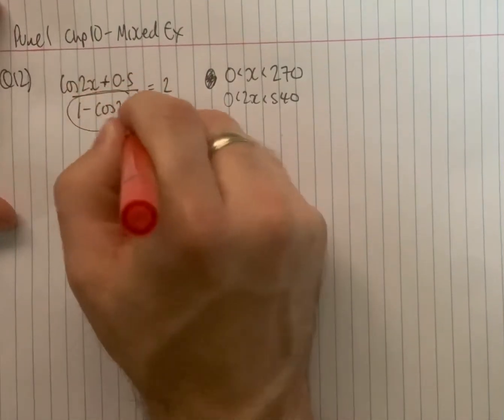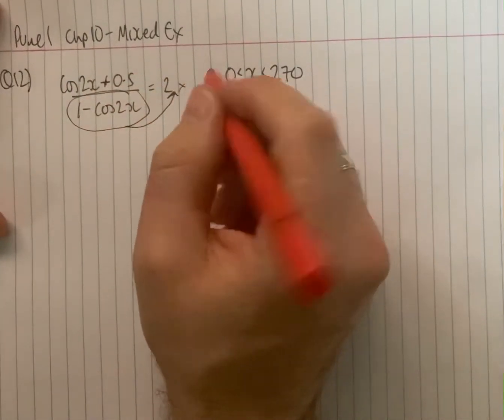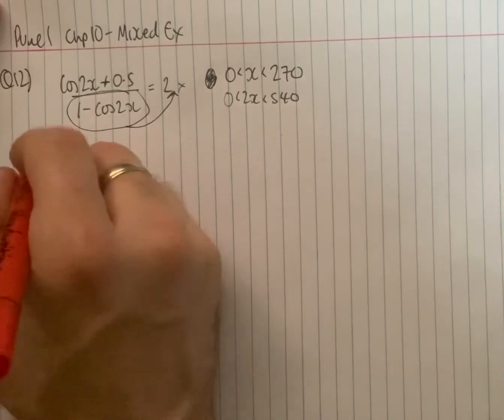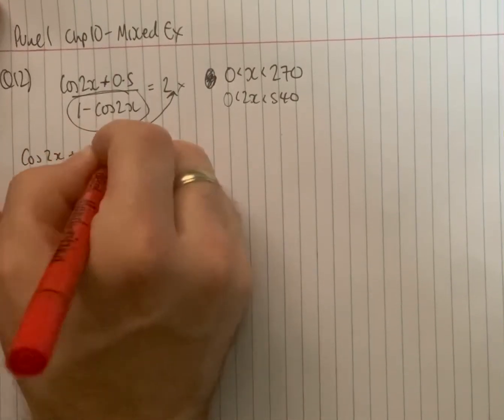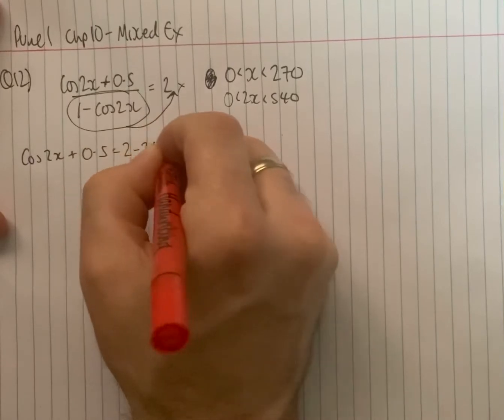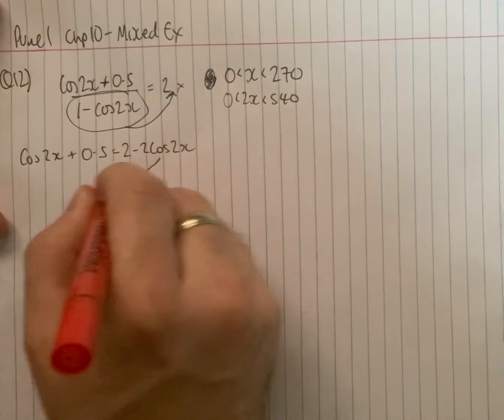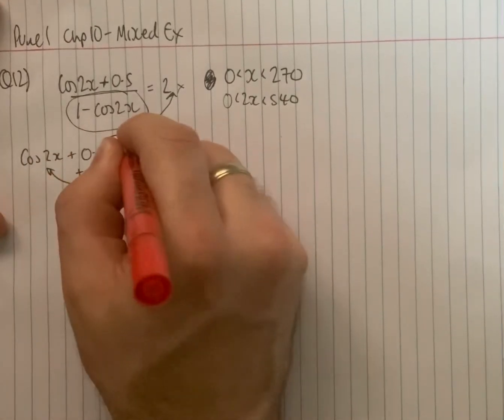Well, first thing to do is take all of this and smack it out to the other side as a times. So times this by 2 and that will give us cos 2x plus 0.5 equals 2 minus 2 cos 2x. That then comes over as an add, that goes over as subtract.